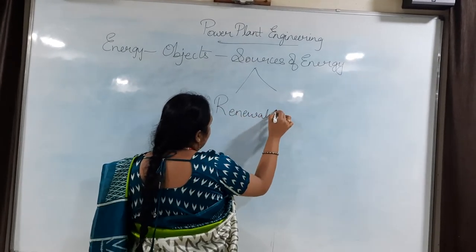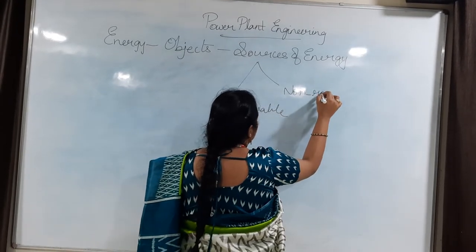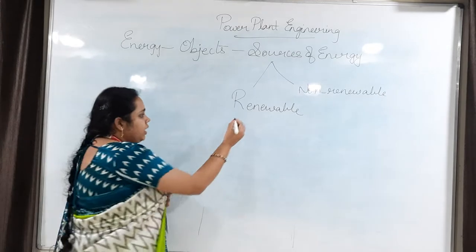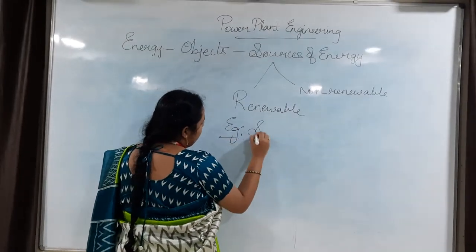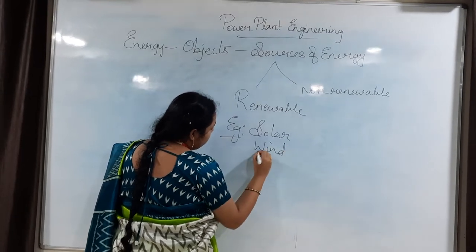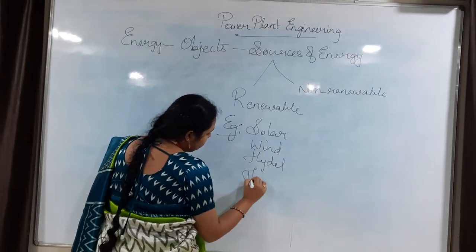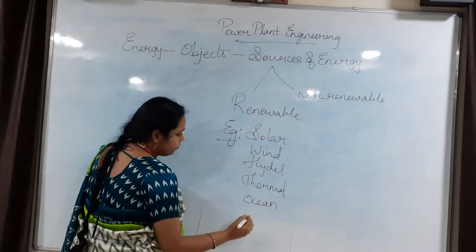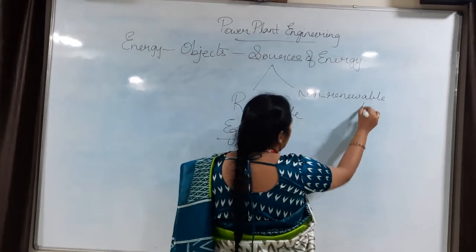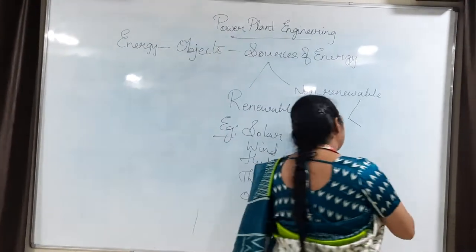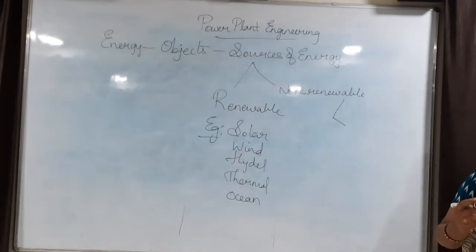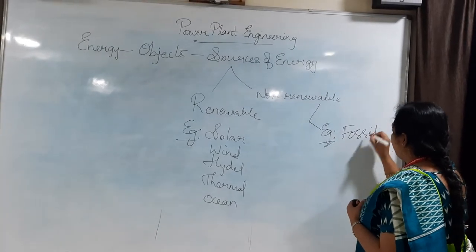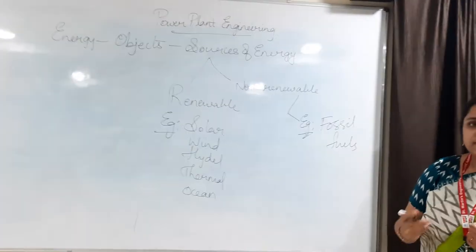They are renewable and non-renewable. Renewable is nothing but which we can renew every time. Examples include solar energy, wind energy, hydro energy, thermal energy, ocean energy. Coming to non-renewable sources — the sources which will be exhausted at one moment of time. Example: fossil fuels. We cannot use them further for many years because they will be extinct one day.